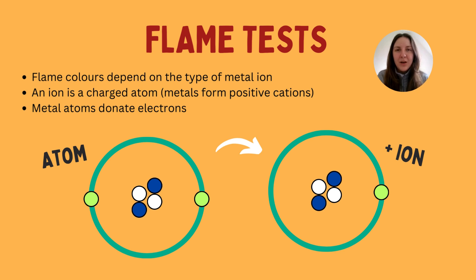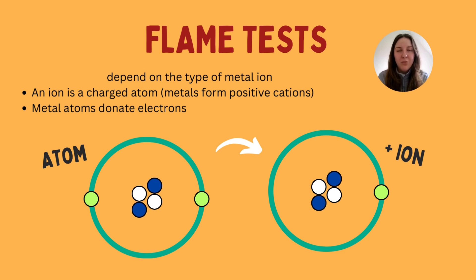When we talk about flame tests, we need to be aware that metal ions form when atoms of metals lose or donate an electron, and this forms a cation — a positively charged ion. All metal ions will be positively charged: they can have a plus one, plus two, plus three, or plus four charge, depending on how many electrons they are donating. Make sure you know the difference between an atom, which is not charged, and an ion, which is charged because it has donated an electron.